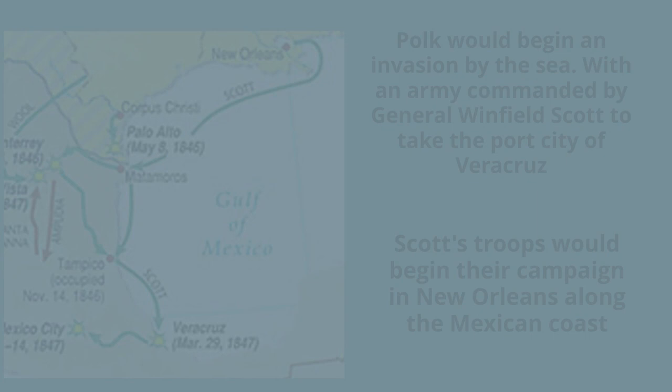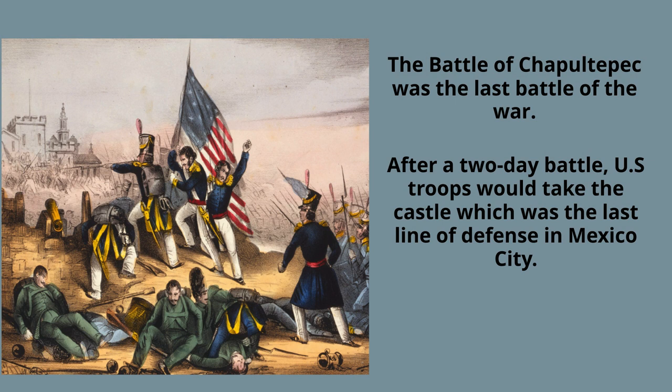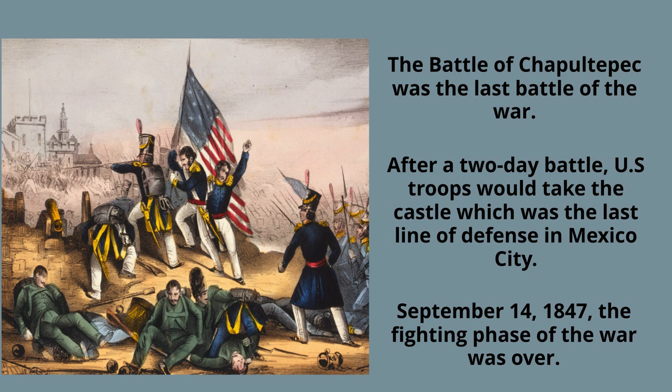By March of 1847, Scott and his troops had taken Veracruz and began fighting toward Mexico City. Though there was Mexican resistance, Scott's campaign was marked by a series of unbroken victories. On September 14th, he would reach Mexico City after being victorious in the two-day battle of Chapultepec, bringing an end to the military conflict side of the war.